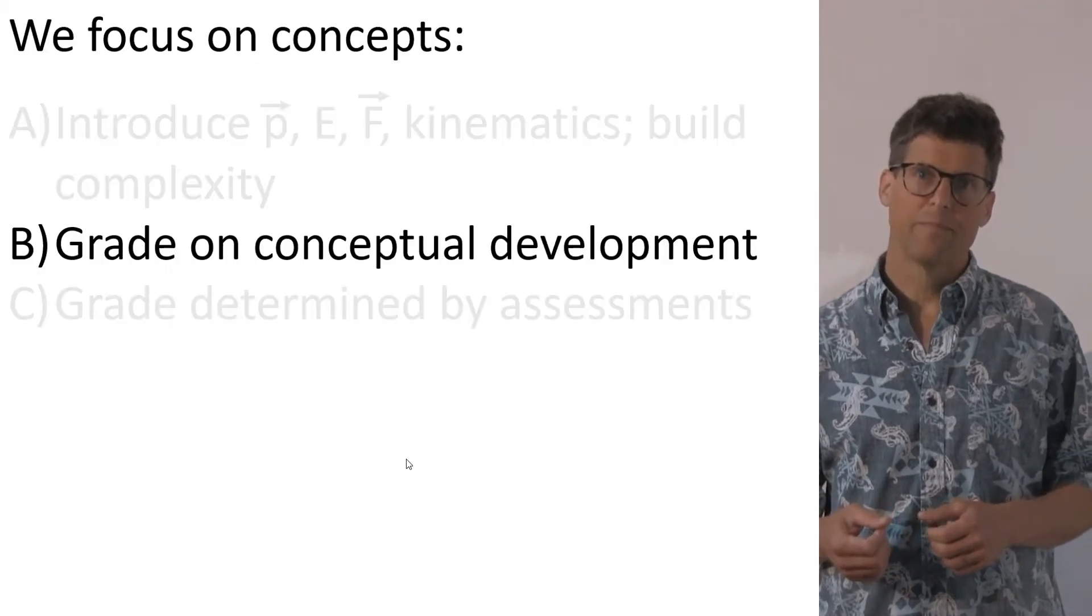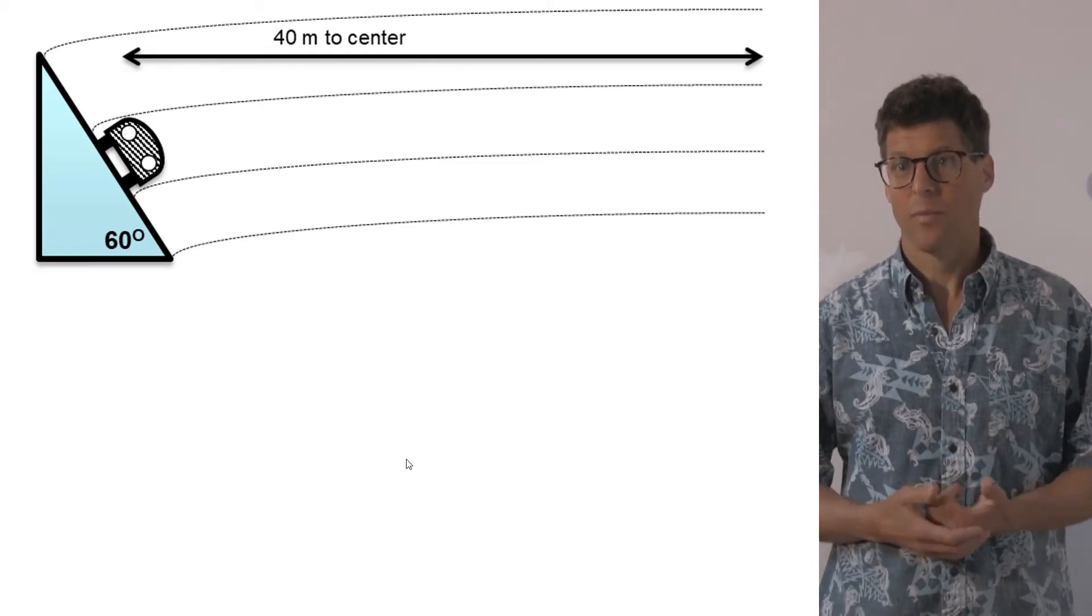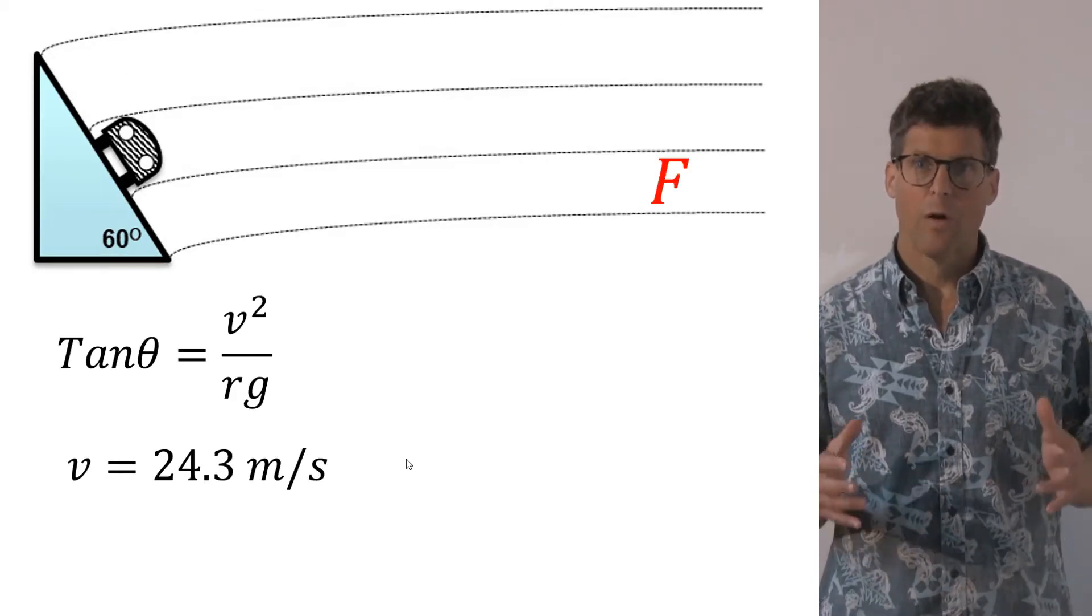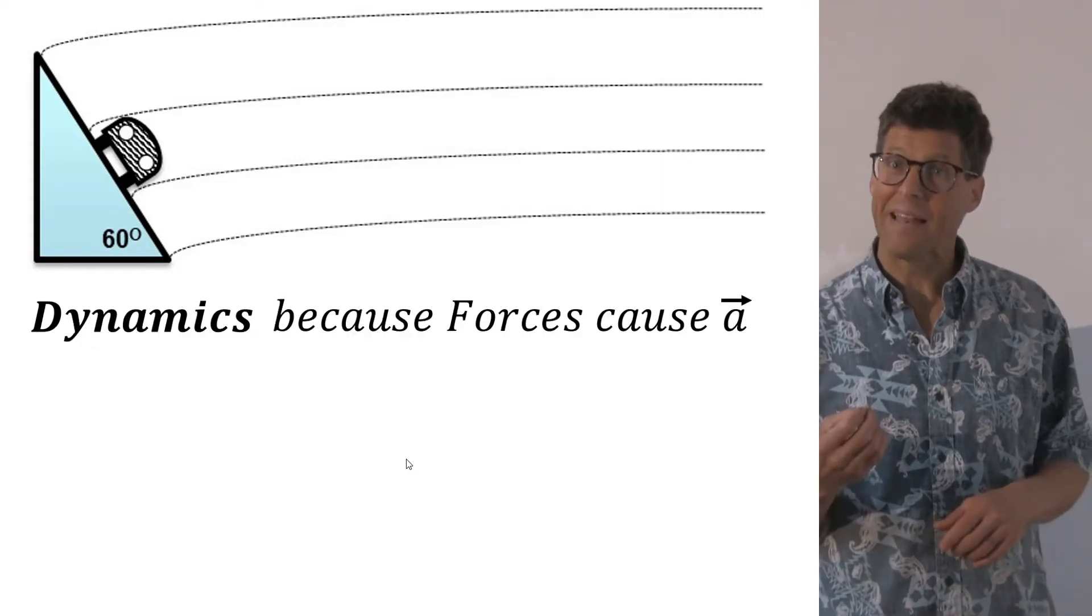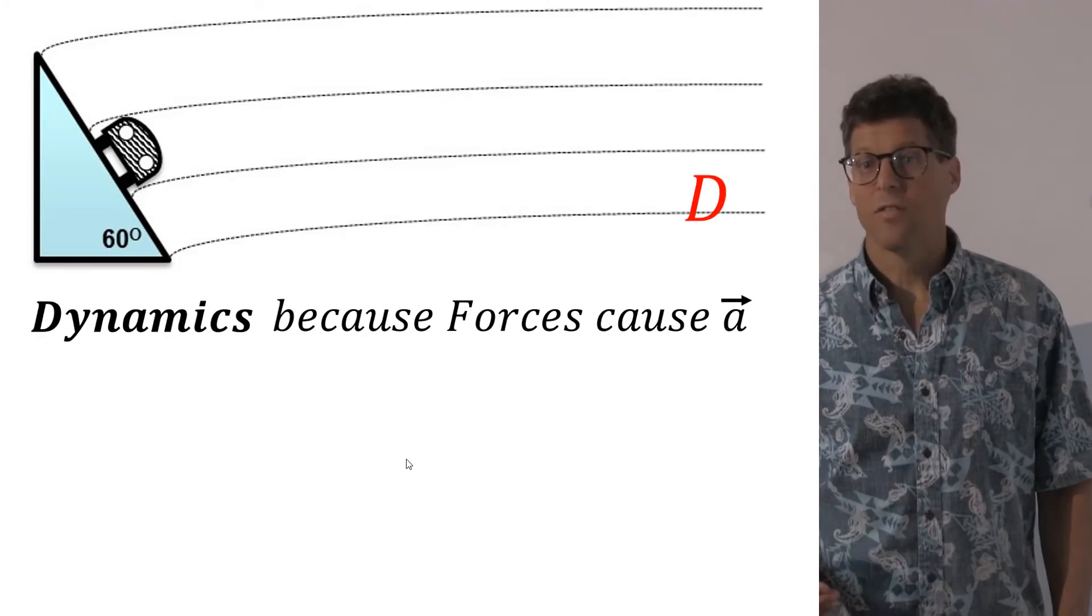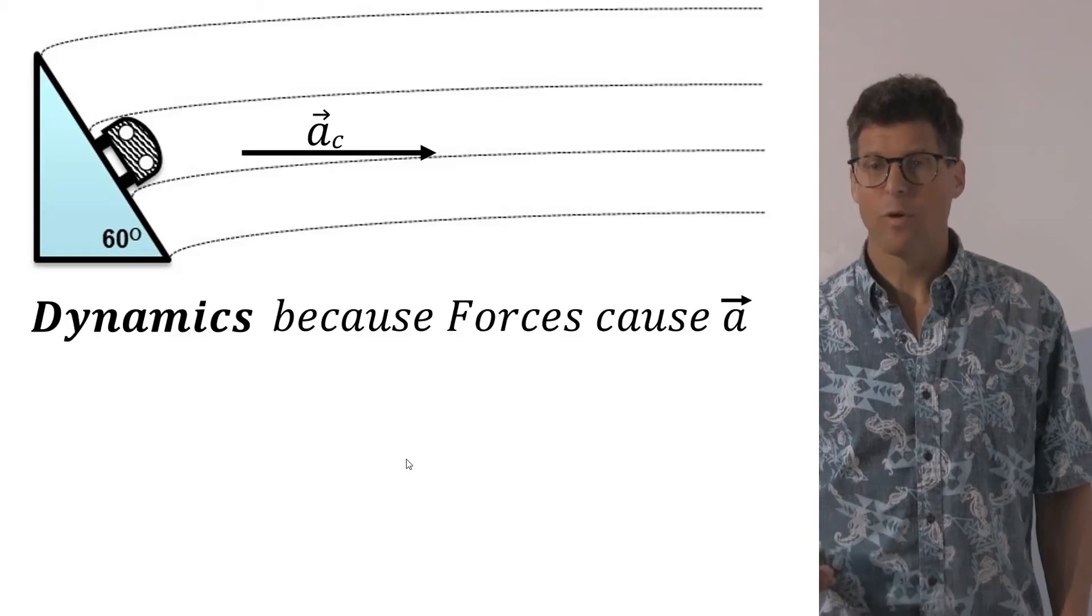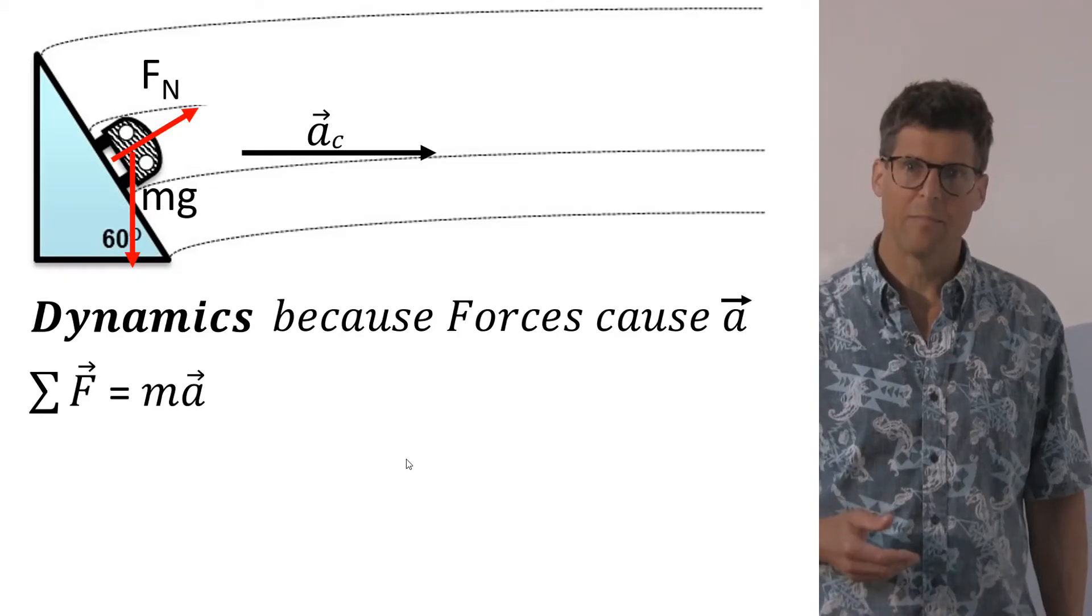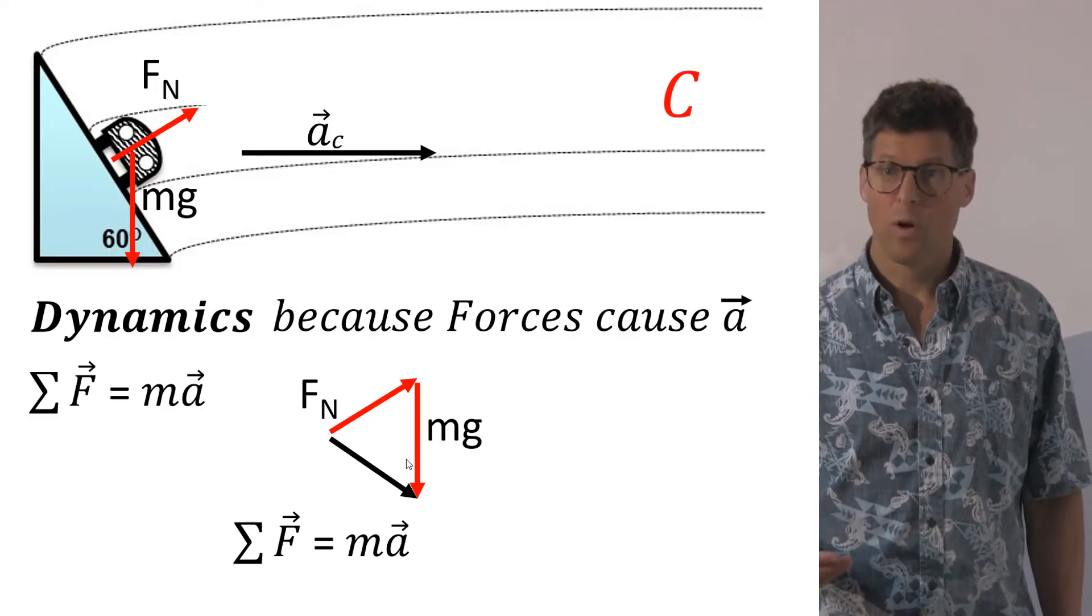So how do we grade our conceptual development? For instance, the example of a car coming around an off-ramp on a slippery road. A student may remember the formula, put the numbers in, and get the correct answer. For our assessments, this would earn them an F. However, if they first identify this is a dynamics problem because forces are causing acceleration, they would get a D. And if they recognize this acceleration with centripetal acceleration oriented inward, and this acceleration is a result of the sum of the forces, subsequently identifying the forces in a free body diagram, and adding them to get the resultant force, they would get a C because it's in the wrong direction.